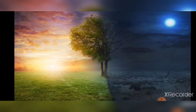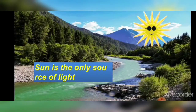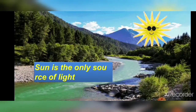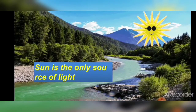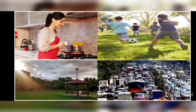In day time we can see only one star — sun — and in the night we see so many stars and moon. Stars are always present in the sky, but the sun being the brightest hides other stars during the day time. Stars are present but sun's brightness is so much that it hides all the stars. Sun is the only natural source of light. It helps us to see everything around us.